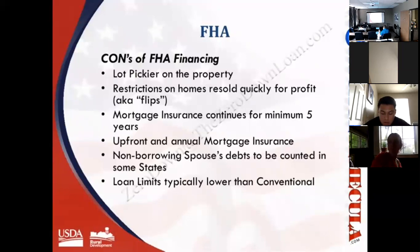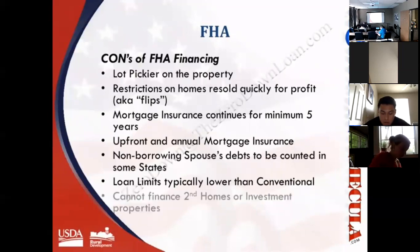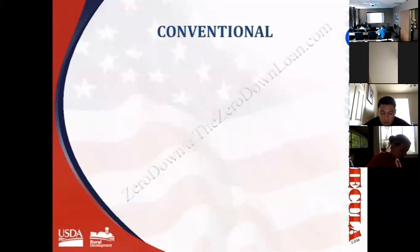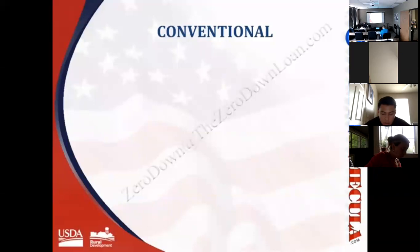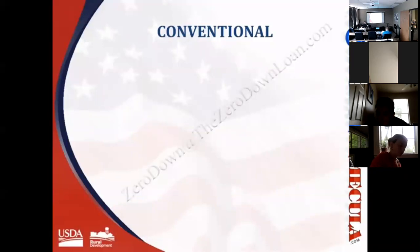The loan limits set for counties involving FHA financing are typically lower than those set by Fannie Mae and Freddie Mac for conventional loans. FHA loans cannot be used to buy investment properties. Conventional interest rates tend to be a little higher because Fannie and Freddie, while government-sponsored enterprises, are not technically the government. There are pricing adjustments for factors like loan-to-value — for example, 85% LTV would carry a higher interest rate — as well as loan size, credit score, occupancy status, and property type.